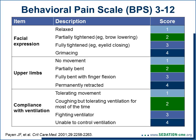The first tool is the BPS, or Behavioral Pain Scale. It looks at three main criteria: facial expression, upper limb position, and compliance with ventilation. Each of these three areas is scored between one and four, so the lowest score possible is three, associated with the least pain, and twelve associated with the most pain.